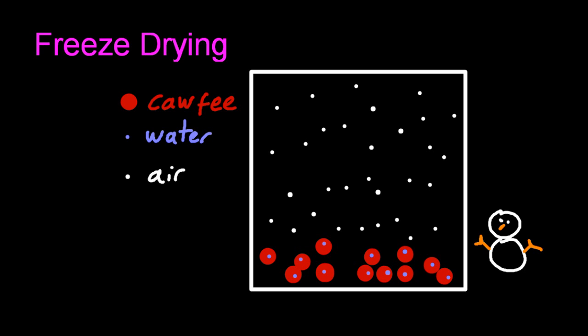Now, why doesn't that water sublime from the coffee bean from the solid to the gaseous phase? Well, the air pressure above, the air molecules above are keeping that water in the coffee bean.